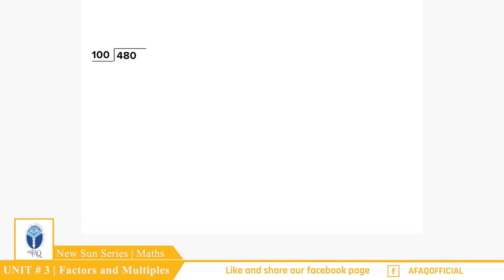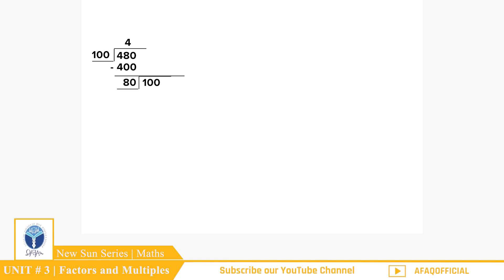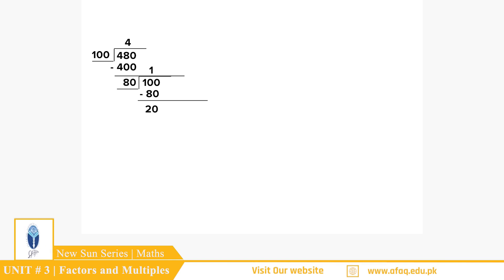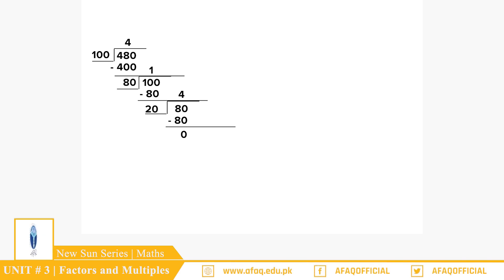480 کو 100 پر divide کیا تو quotient 4 آیا۔ 400 کو subtract کیا 480 سے تو remainder 80 آیا۔ 80 dividend بنا، 100 divisor — 80 کو 1 سے multiply کیا تو 80 آیا، 100 سے 80 subtract کیا تو remainder 20 آیا۔ 20 divisor بنا، 80 dividend — 20 کو 4 سے multiply کیا تو 80 آیا، subtract ہوا تو remainder zero بنا۔